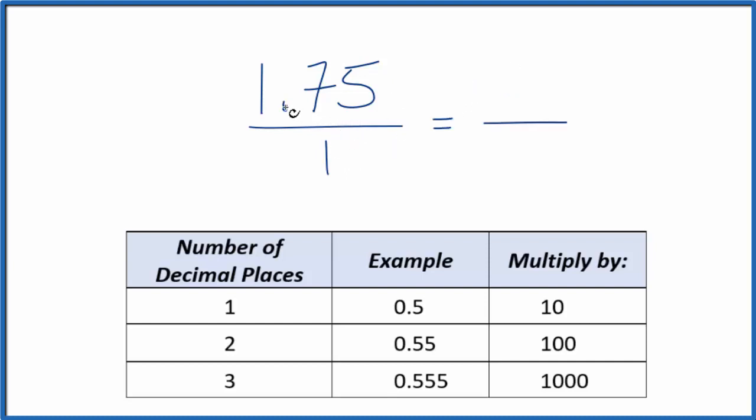I see we have two decimal places—1, 2. Two decimal places, so we're going to multiply by 100. 100 times 1.75, that's 175, and that's a whole number.